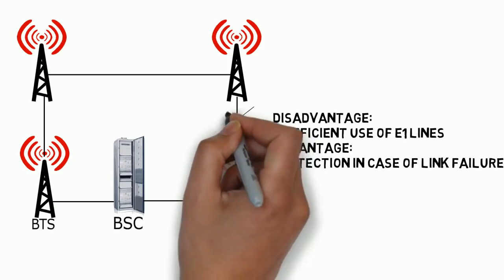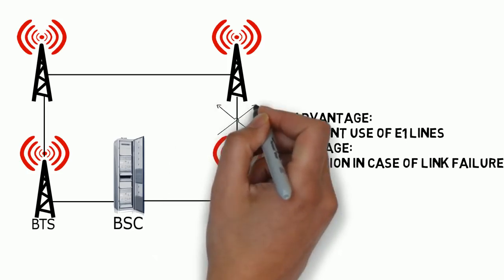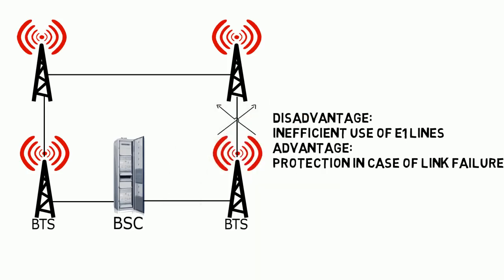One of the major advantages of the ring configuration is that if there is a break in a connection, as is evident in the diagram, that BTS is still connected to the network. The traffic to that BTS can be switched to the alternate path.